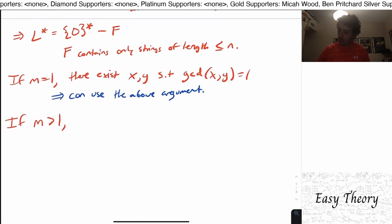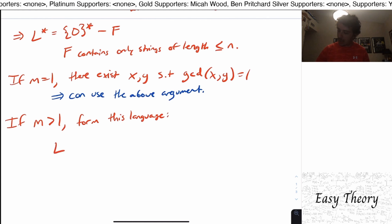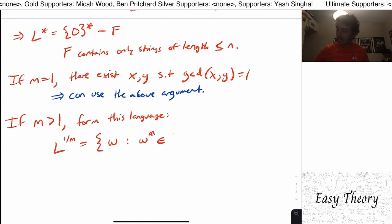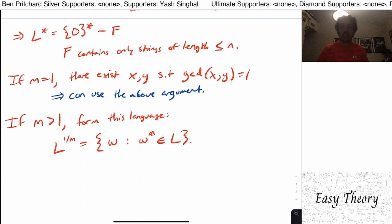So what can we do if that's the case here? What we can do is to form a particular language. So let's form this language right here, which is going to be L to the power one over M. And what is this language? It's all of the strings W, such that W to the M is in L.